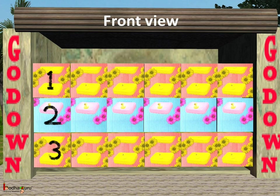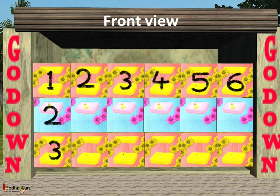This is Manilal's factory godown and we are viewing it from the front. From the front, it looks full. How many boxes are there? Well, there are 3 rows and 6 columns. So if we see from the front, we can see 6 multiplied by 3, which is equal to 18 — that is, 18 boxes.